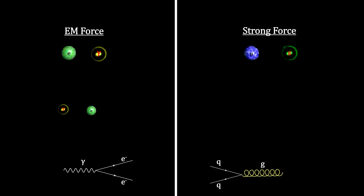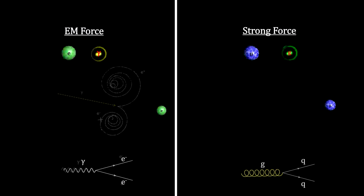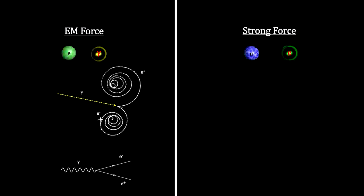And where photons can accelerate electrons, gluons can accelerate quarks. And where an energetic photon can create an electron-anti-electron or positron pair, an energetic gluon can create a quark-anti-quark pair.